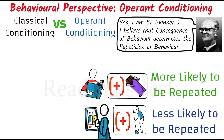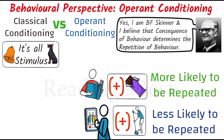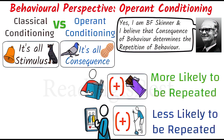A major difference between Classical Conditioning and Operant Conditioning is that in Classical Conditioning behavior depends on a preceding stimulus, whereas in Operant Conditioning behavior doesn't depend on a preceding stimulus — rather it depends on the consequence that follows after the behavior.